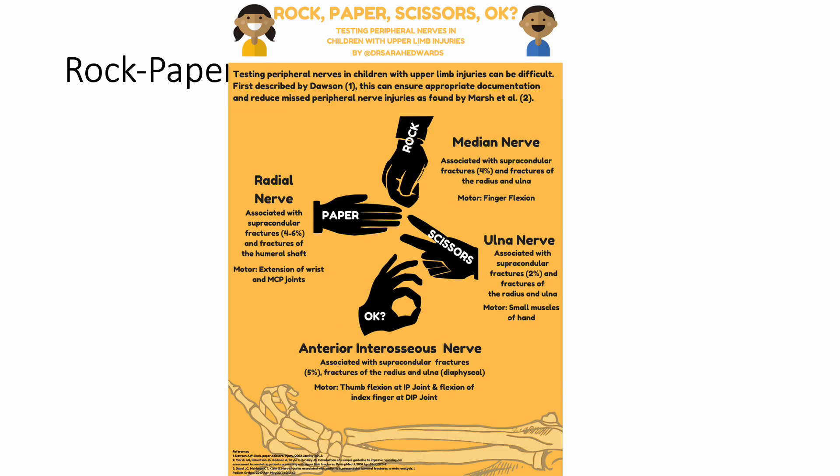There is an interesting game we play called Rock, Paper, Scissors, Okay. There was a paper published which talks about assessment of supracondylar fracture or hand injuries in a pediatric population, where if they are able to make the paper sign, the radial nerve appears to be intact. If they are able to make the rock sign, the median nerve is intact. If they are able to abduct the index and middle finger — that is scissors — the ulnar nerve is intact. And if they are able to make an okay sign, the anterior interosseous nerve is intact.